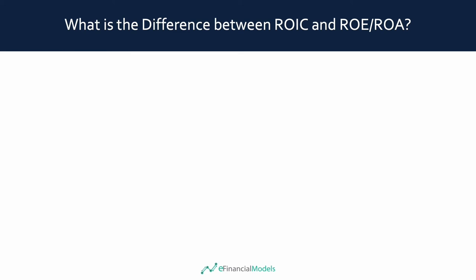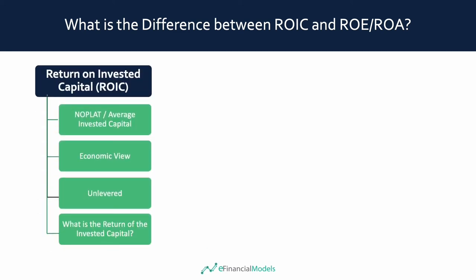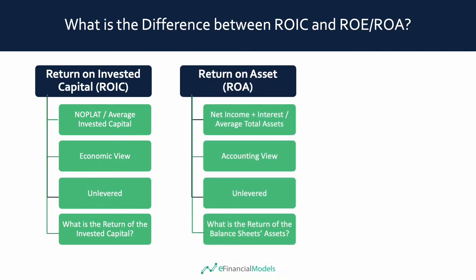What is the difference between ROIC, ROA, and ROE? Return on invested capital is calculated by dividing NOPLAT by the average invested capital. The ratio is not affected by the use of debt financing — it is unlevered — and gives us the economic view of a company's profitability. Return on assets takes a company's net income from the income statement, adds back the interest expense, and divides the total by the company's average total assets. ROA is also an unlevered ratio, but profitability is calculated strictly from an accounting point of view. In case the company has a lot of excess cash or non-operating assets, ROA can become quite distorted.